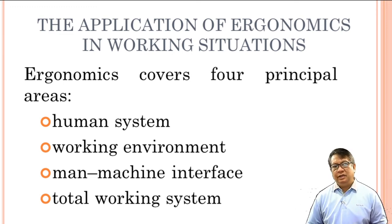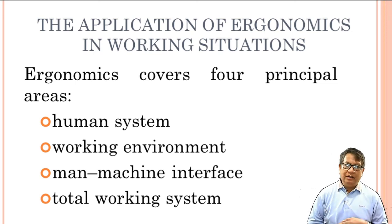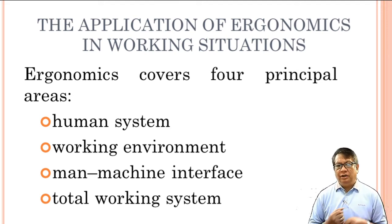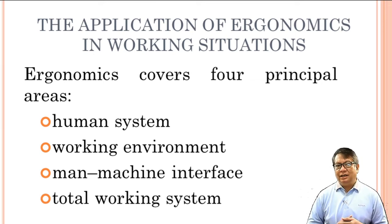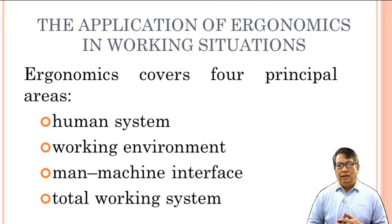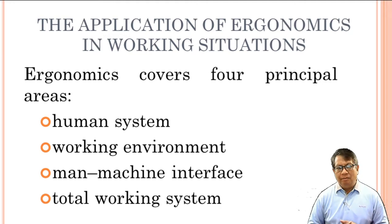The third area is man-machine interface — interfacing the operator with the machine. How will the operator operate this machine? The machine itself is not a problem; when it functions, that is its function. But if there is no person, it will not function. However, we should consider the ergonomics and comfortability of that person while doing their job. So that is man-machine interfacing.